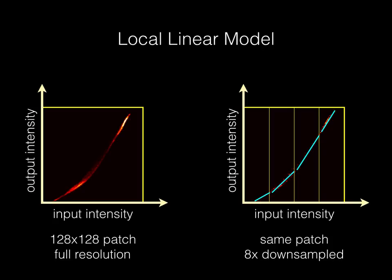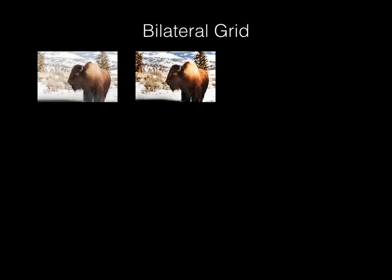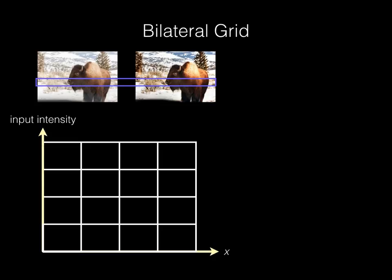So this is true only for a single patch. We need to extend the model to the entire image. Let's consider a single scanline, and plot the curve we just fit in 2D. The x-axis is pixels across, and the y-axis is the input intensity.